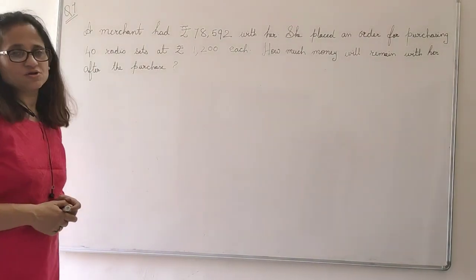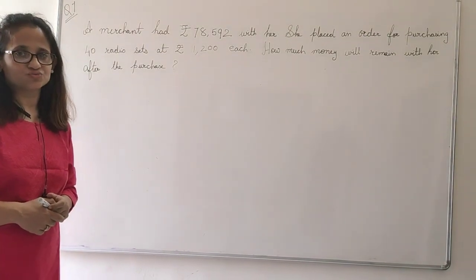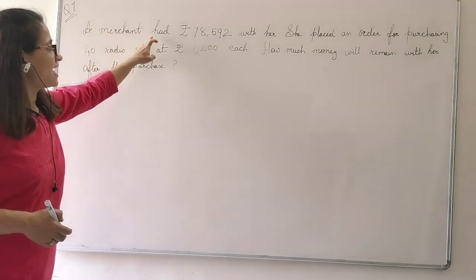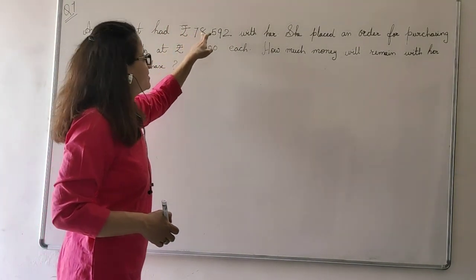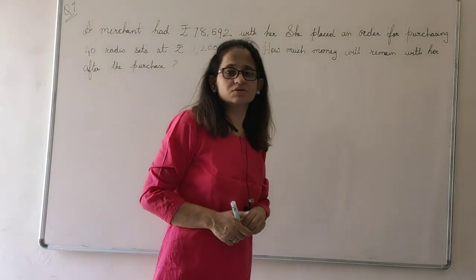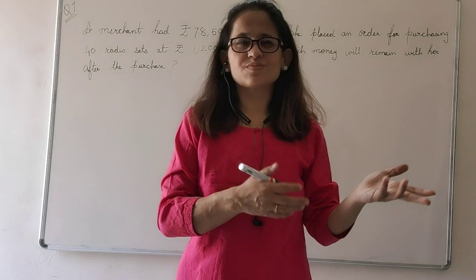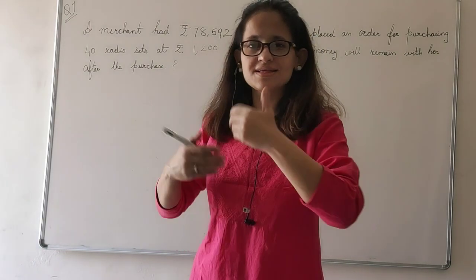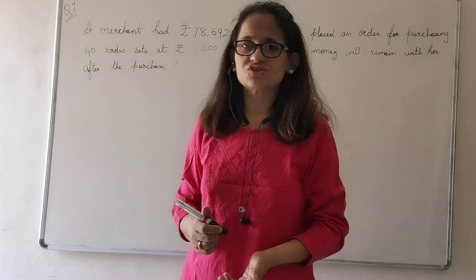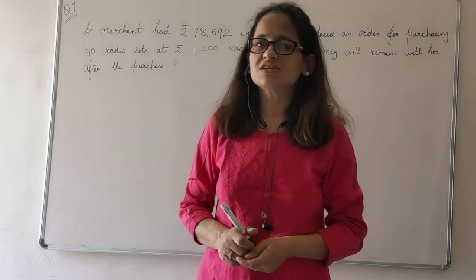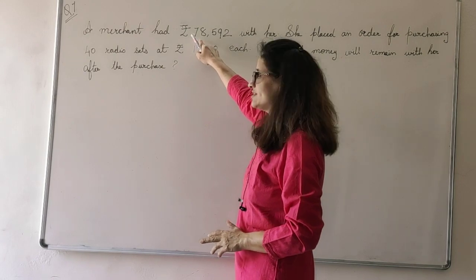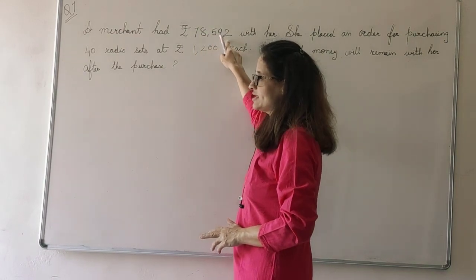Question number 7 of exercise 1.2. A merchant had rupees 78,592 with her. Merchant means a trader which buys something from a factory and then sells it to the customers. Now this merchant in her bank account she had 78,592.